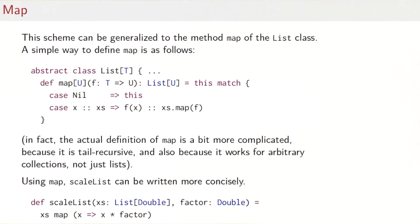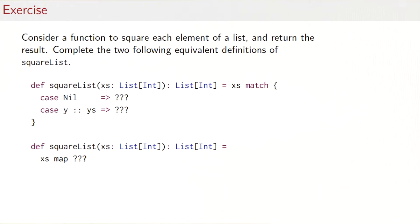So using map, we can now write scaleList much more concisely, so much more concisely that it's hardly worth writing a different function for it. We would just say scaleList of xs and a factor is xs map with the function that takes an x and multiplies x by the factor. So here's an exercise for you.